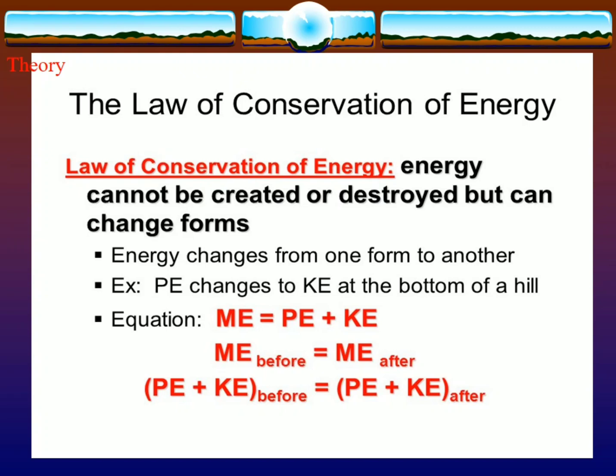The Law of Conservation of Energy states that energy cannot be created or destroyed but can change forms. Energy changes from one form to another. For example, potential energy changes to kinetic energy at the bottom of a hill.